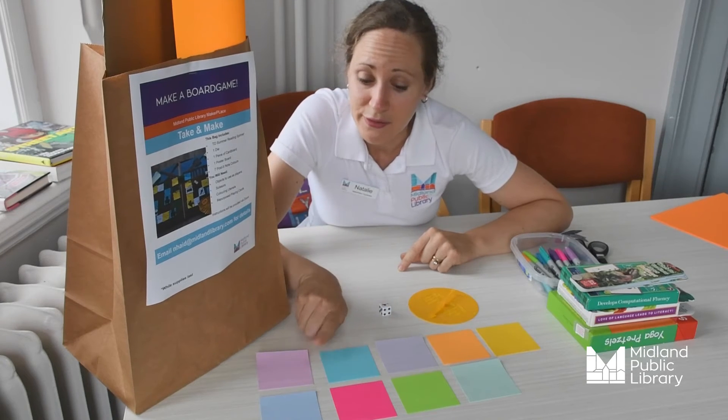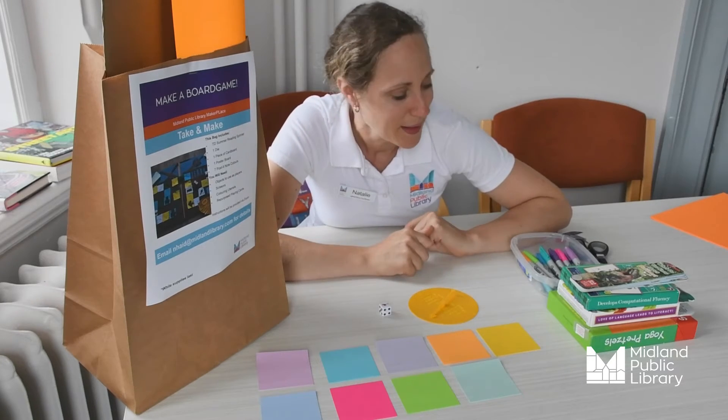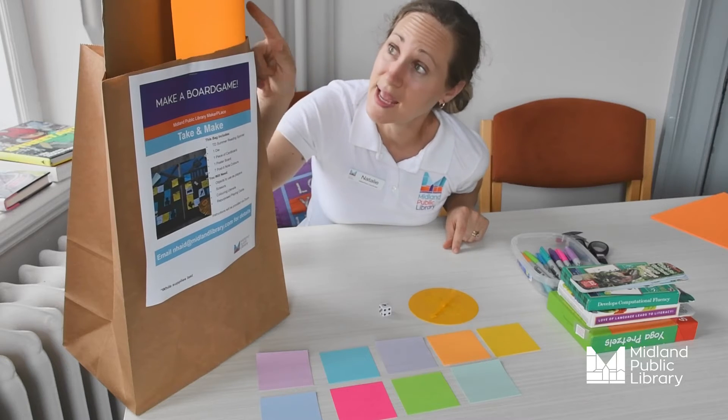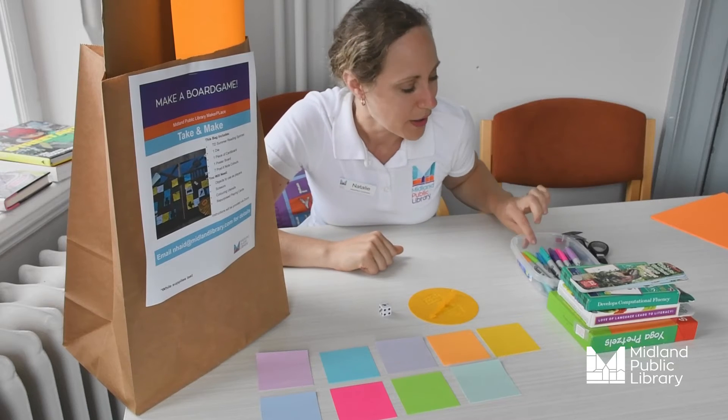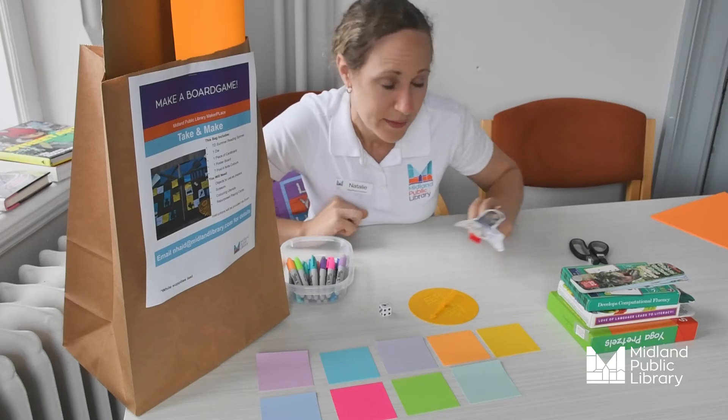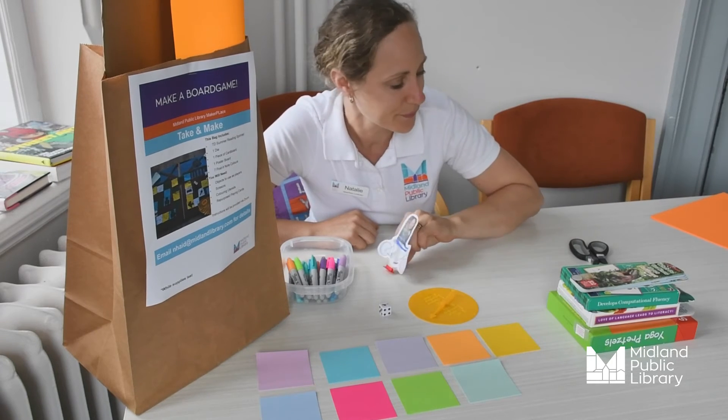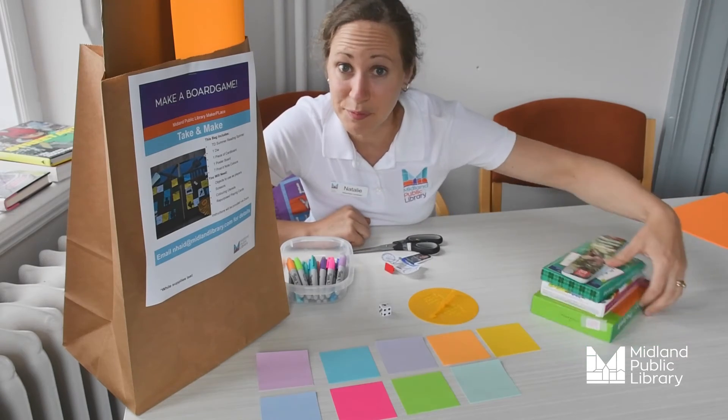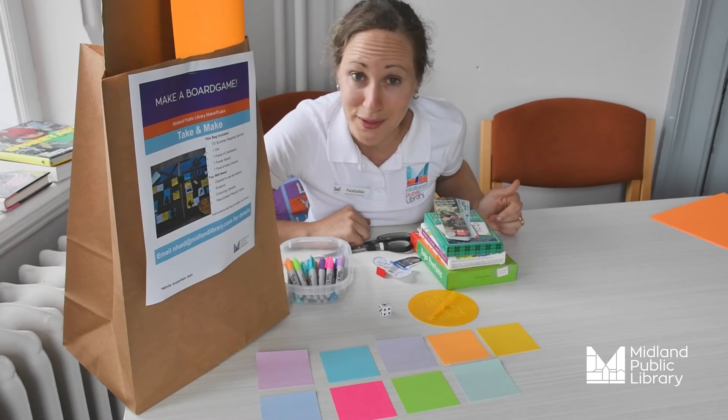You'll find seven colored post-it notes. There are six each. And then additional things you'll need besides your poster board and your cardboard that you find within your kit are writing utensils or coloring utensils, something you can use, some kind of object as your players, scissors, and repurposed playing cards. That can be trivia cards, flash cards, any kind of cards.